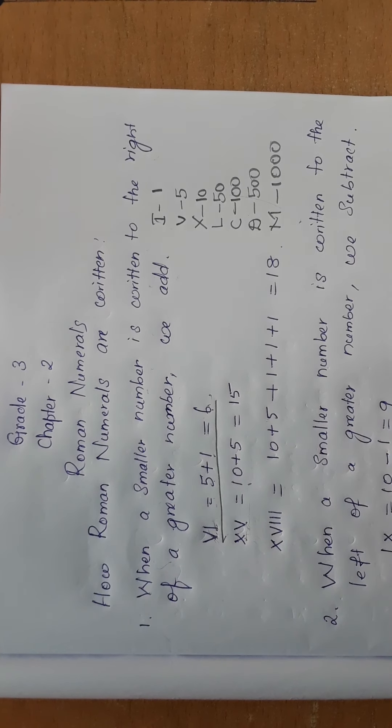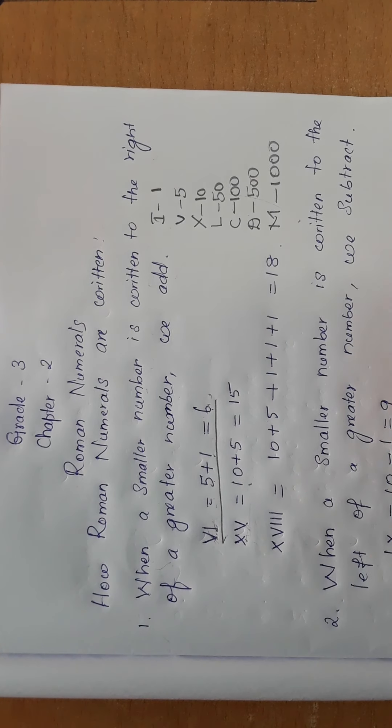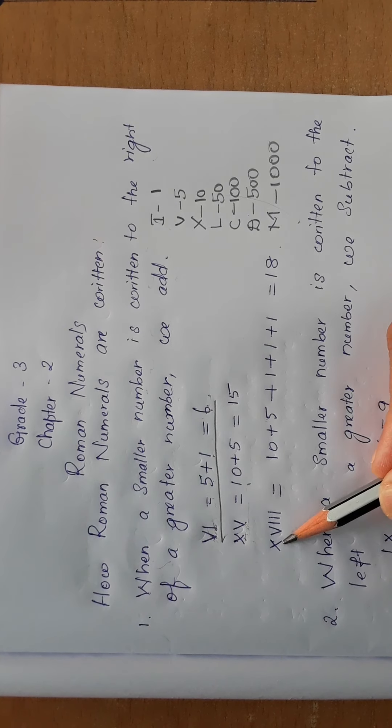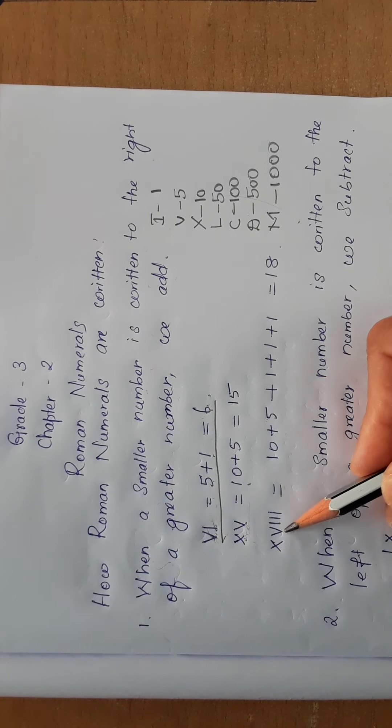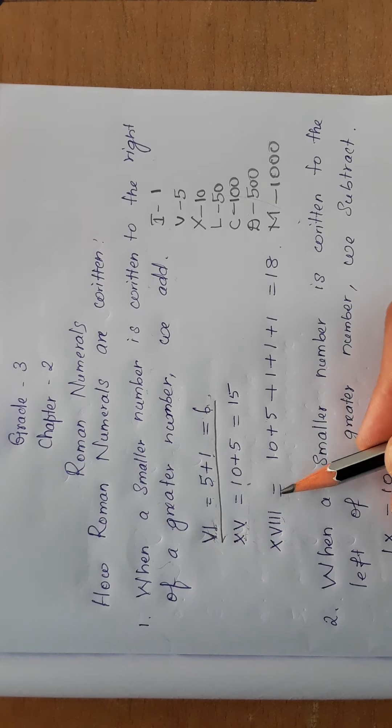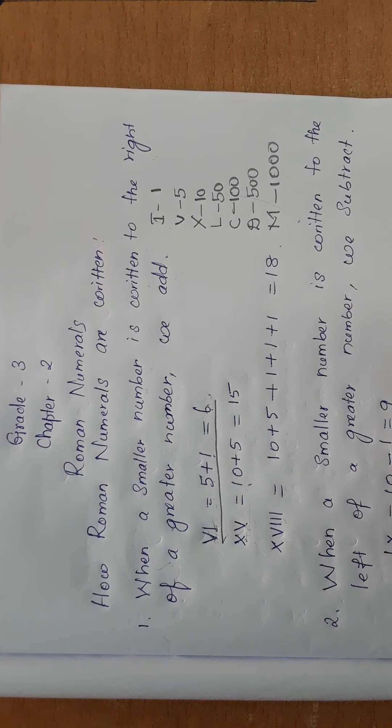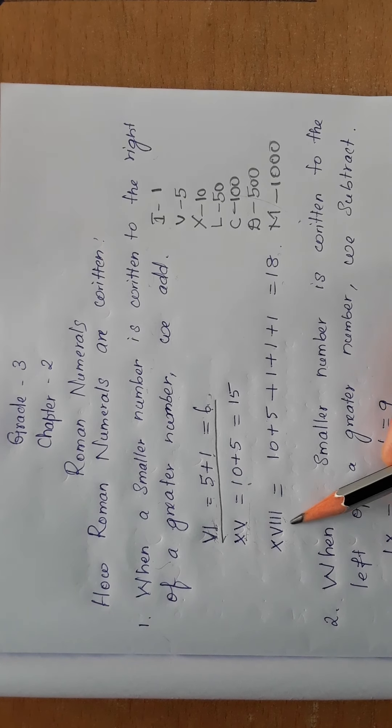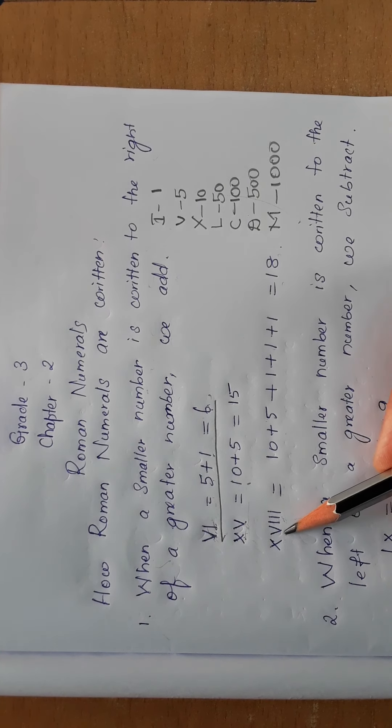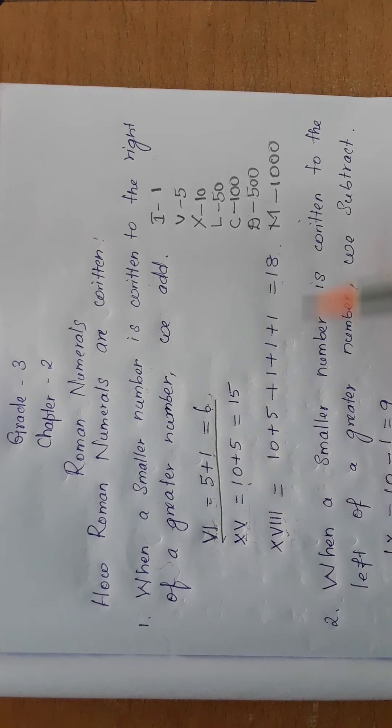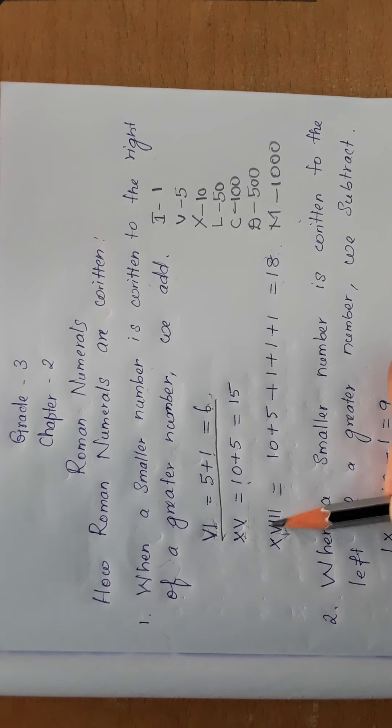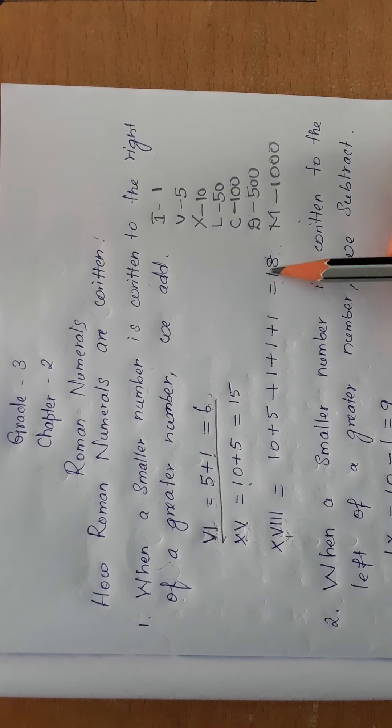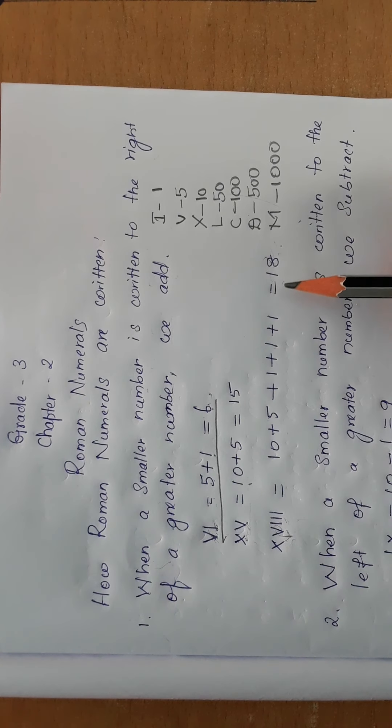After that, see here, look here: XVIII. X is 10, V is 5, I I I is three ones. So we add it: 18. So how to write 18 in Roman numerals? In this way: XVIII, understood? And you can convert from number to Roman numeral and Roman numeral to Indian number. These are the two ways. All right.